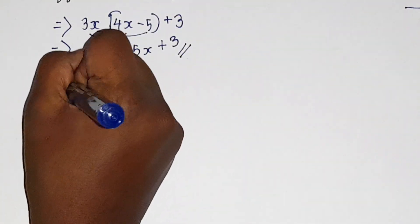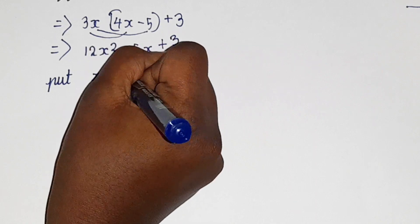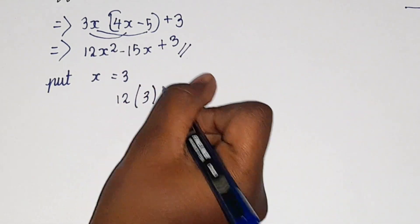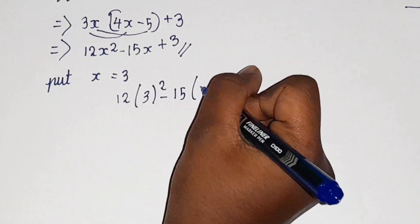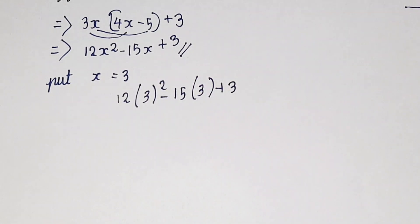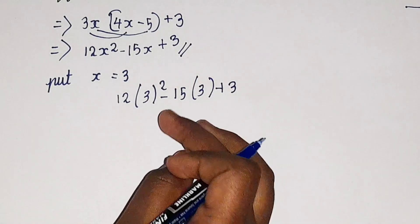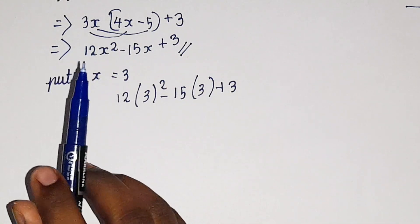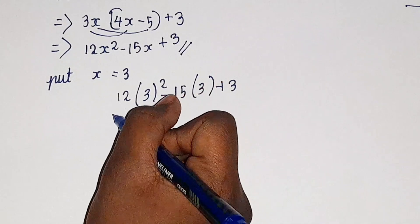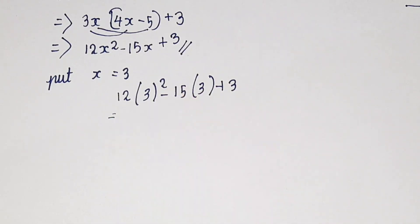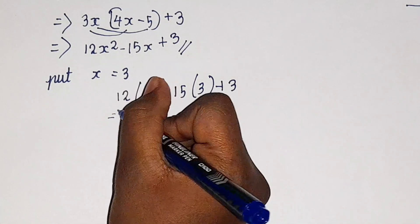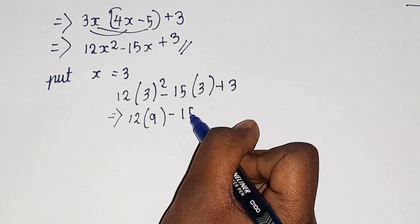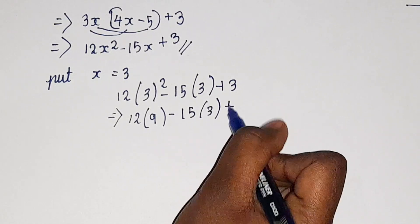Now we will put x equal to 3. We will write it as 12 into 3 squared minus 15 into 3 plus 3. Here you guys can see I have replaced x squared with 3 squared and x with 3, because we should substitute x as 3. Now we will solve it. 3 squared is 9, so we have 12 into 9 minus 15 into 3 plus 3.